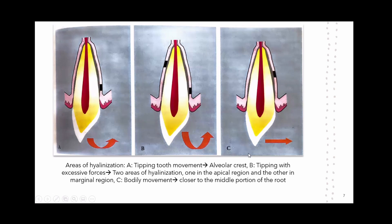If tipping is performed with excessive forces, two areas of hyalinization occur: one in the apical region and the other in the marginal region. In the case of bodily movement of the tooth, hyalinization can be seen closer to the middle third of the root.